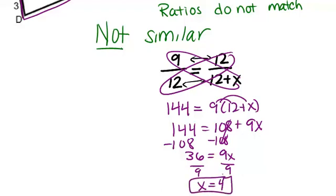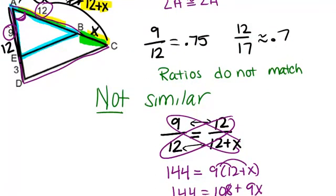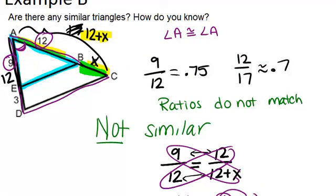So if side BC was 4 in this original problem instead of 5, then the triangles would have been similar because their sides would have been in the same ratio. We'll see you next time.